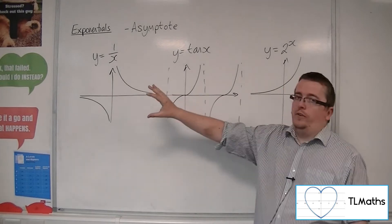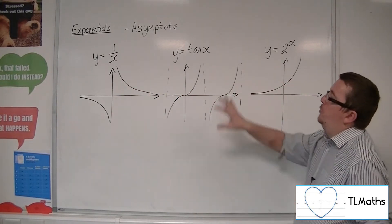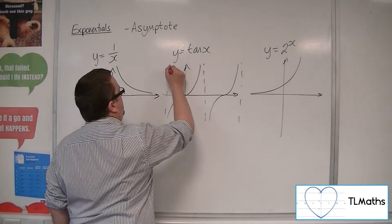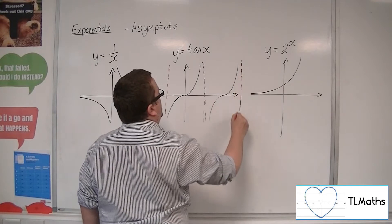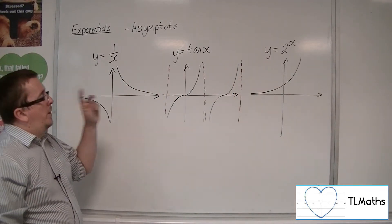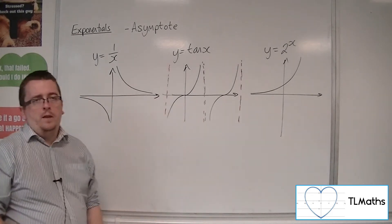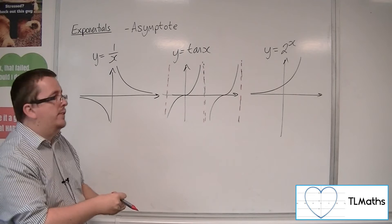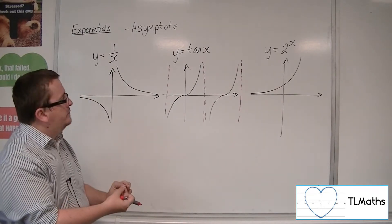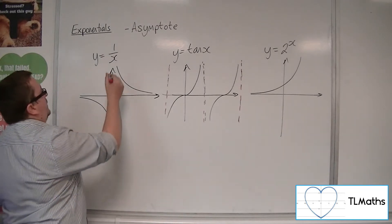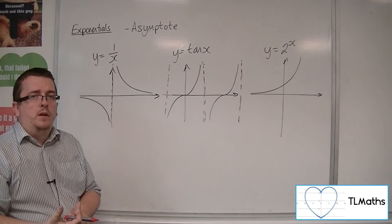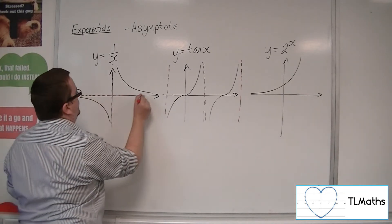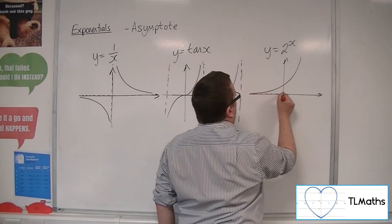If you've met the word asymptote before, it's likely from the tan x graph. Those vertical dashed lines are what we refer to as asymptotes — these are examples of vertical asymptotes. They are parts of the graph that are undefined; tan of x breaks down at those points because you're actually dividing by 0. 1 over x has exactly the same problem when x is 0, so it has a vertical asymptote on the y-axis. It also has a horizontal asymptote, and 2 to the x also has a horizontal asymptote.